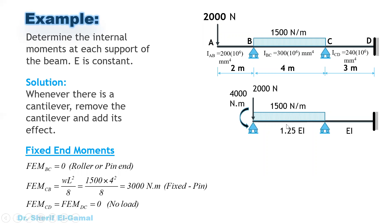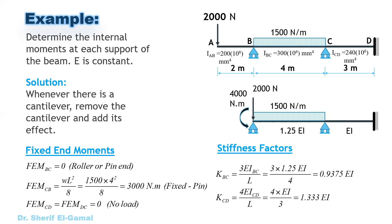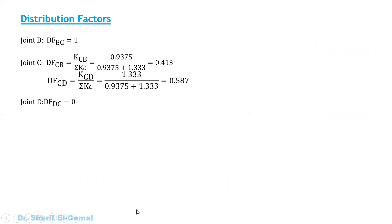If you have different inertia for the spans, consider them accordingly. Take the minimum as I and express the other in relation to it. The minimum here is EI, and the other span is (300/240)×EI = 1.25 EI. Then calculate the fixed end moments: for span BC the fixed end moment at B is zero due to roller support; at CB it is WL² over 8, positive (clockwise). For span CD, fixed end moments are zero on both sides since there is no load. The stiffness for the first span is the special case 3EI_BC / L = 3(1.25EI)/L = 0.9375 EI, and the other span uses 4EI over L.